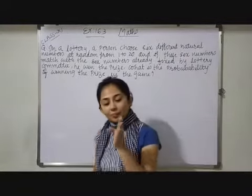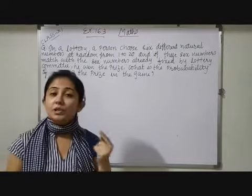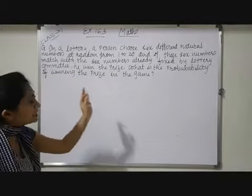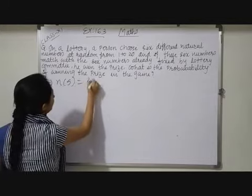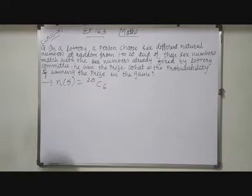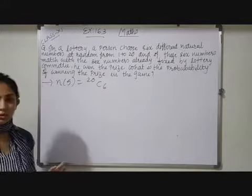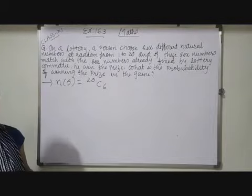So let the number of ways 6 numbers can be chosen by a person will be 20C6. So that here I can write N of S will be 20C6. Because 20 numbers are there and from that 6 numbers can be chosen. So this way 6 numbers can be formed by many different combinations.